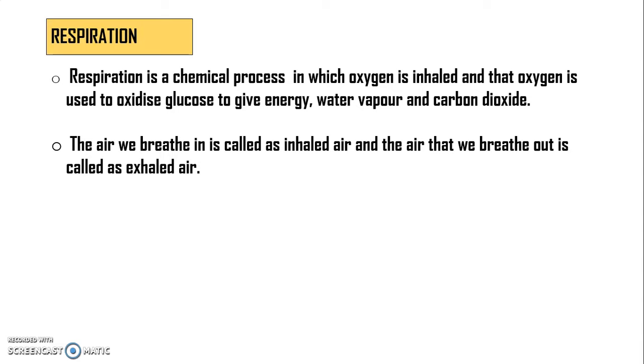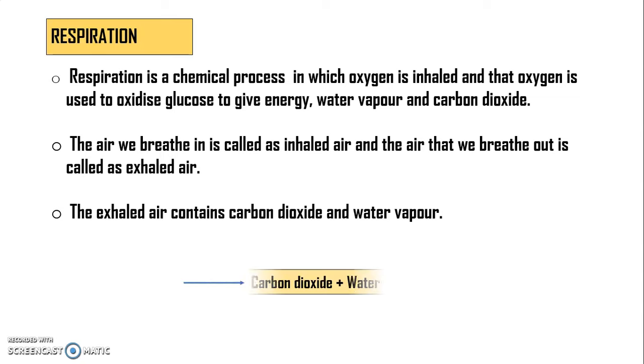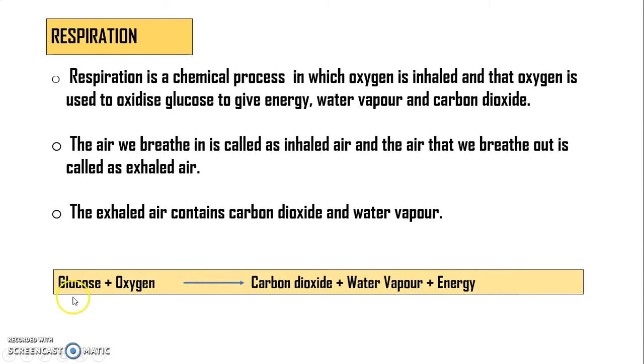And the air that we breathe out is the exhaled air. The exhaled air contains carbon dioxide and water vapor. Now from where does this carbon dioxide and water vapor come? Just look into this equation. We have some stored glucose in our body. When we inhale air that is a major portion of oxygen, glucose reacts with oxygen and this oxygen oxidizes this glucose and converts into carbon dioxide, water vapor and energy.